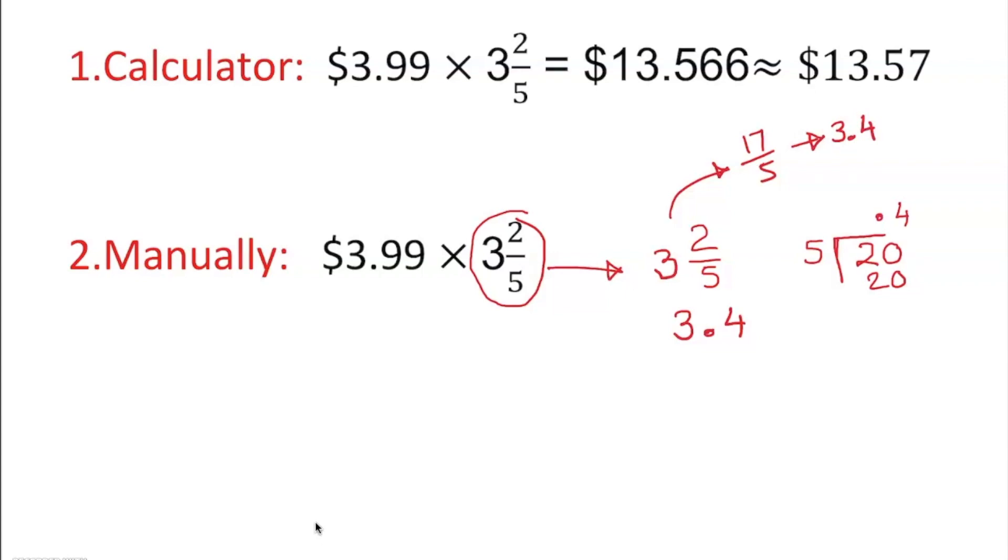Alright. So we have 3.99, without decimal, with decimal, doesn't really matter. And 3.4. We are going to multiply.